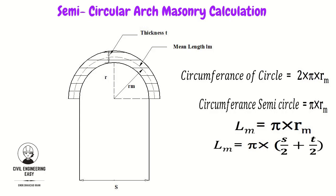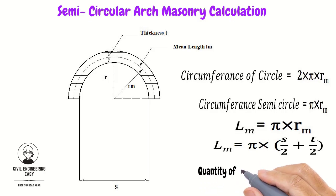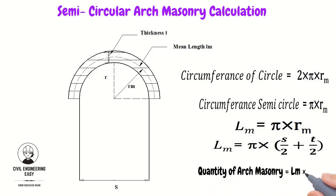Once we find out the mean length of the arch, it is then very easy to calculate the quantity of arch masonry. The quantity of arch masonry is equal to mean length multiplied by the width of the arch multiplied by the thickness of the arch.